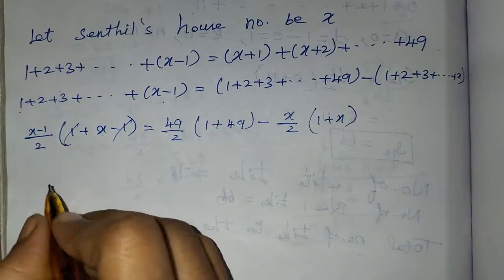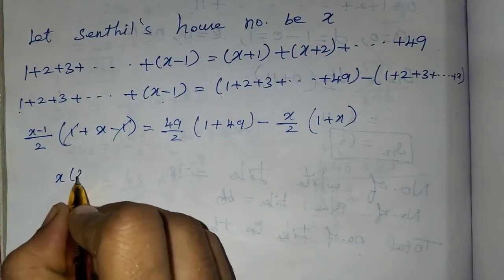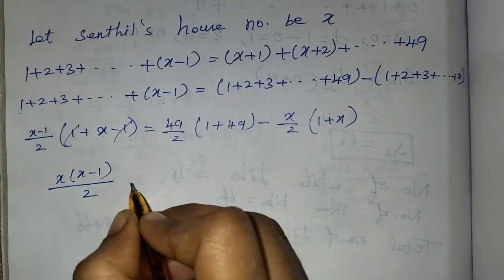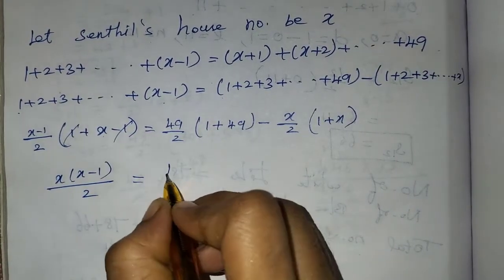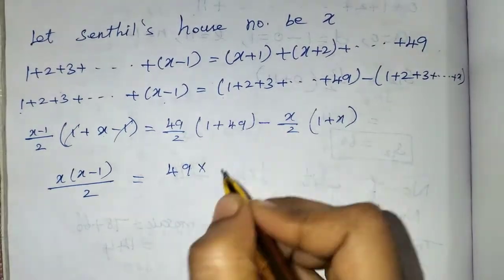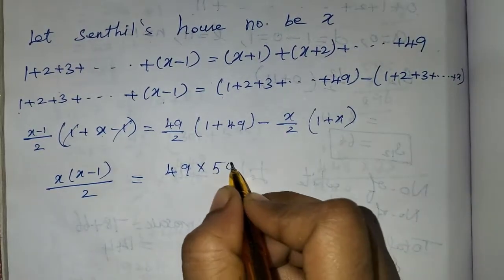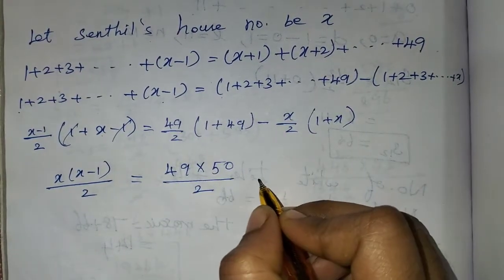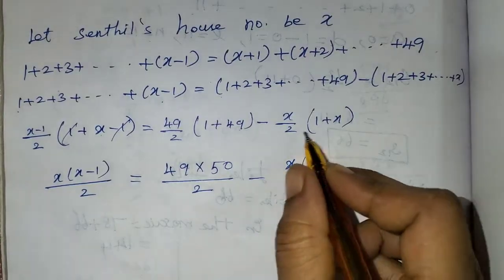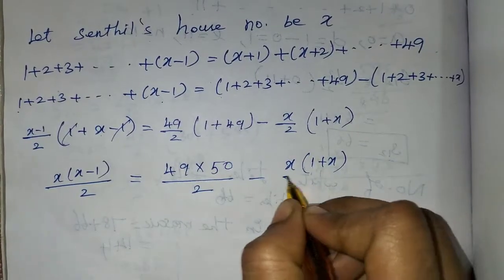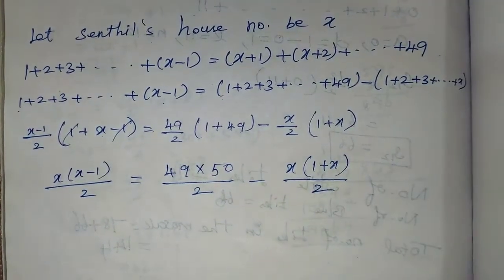This gives us x times (x minus 1) divided by 2 on the left side, equal to 49 times 50 divided by 2 minus x times (1 plus x) divided by 2 on the right side.